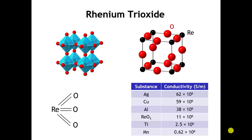Rhenium trioxide itself is kind of an exceptional compound from the point of view of its electrical conductivity. In this table on the lower right, I'm comparing the room temperature conductivity of rhenium trioxide with several metals. We can see it's not as conductive as the most conductive metals like silver and copper. But on the other hand, it's substantially more conductive than early transition metals like titanium or manganese, or even post-transition metals like bismuth. For an oxide compound, which we would normally think of as being an ionic compound, it has exceptional electrical conductivity.